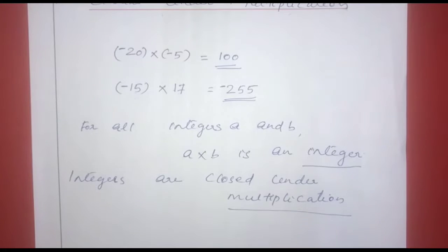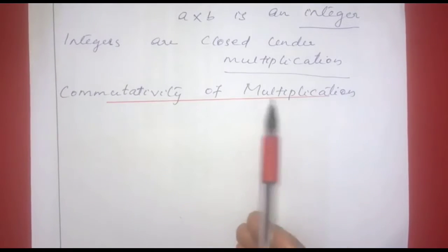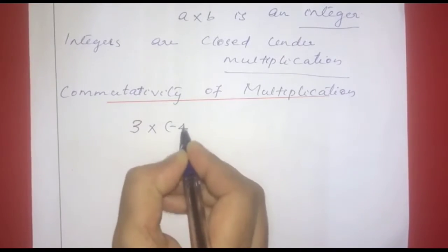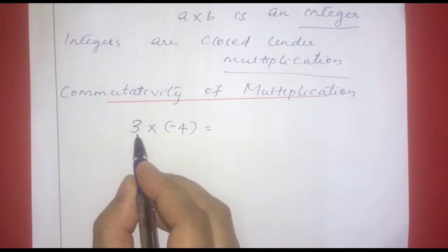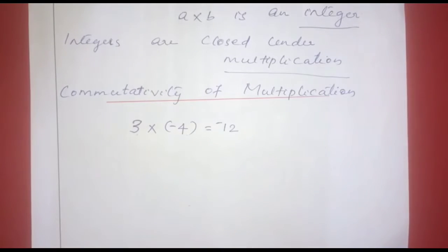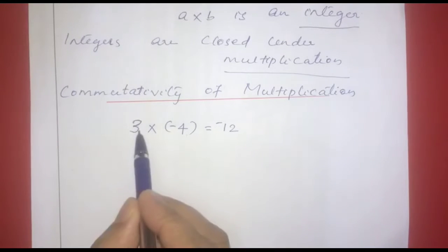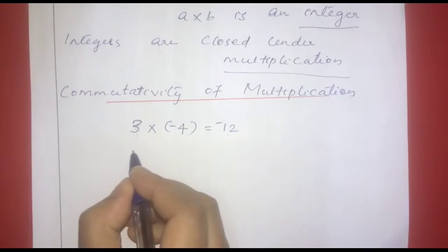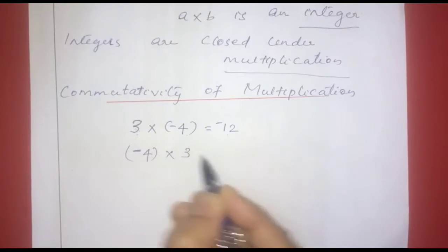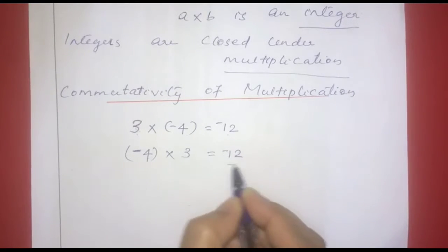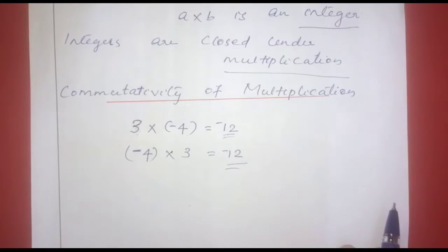The next property is commutativity. In multiplication, we will show the commutativity of multiplication. For example, 3 into negative 4 is equal to negative 12. We will change the order: negative 4 into 3 is also equal to negative 12.